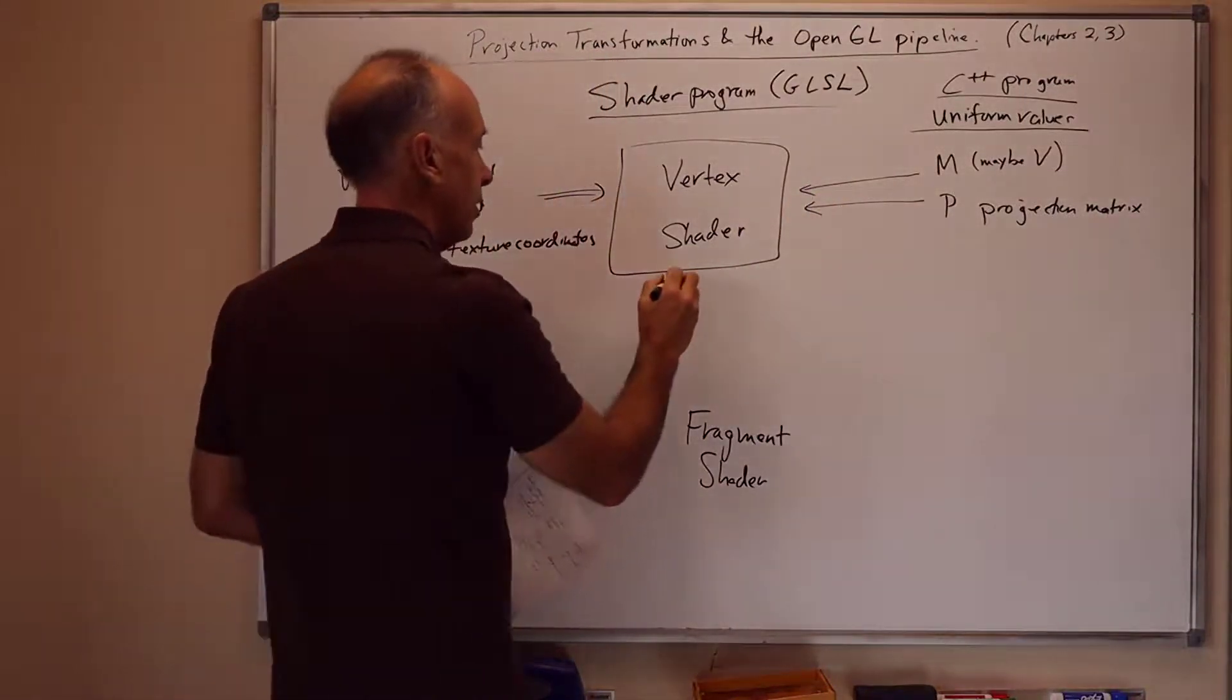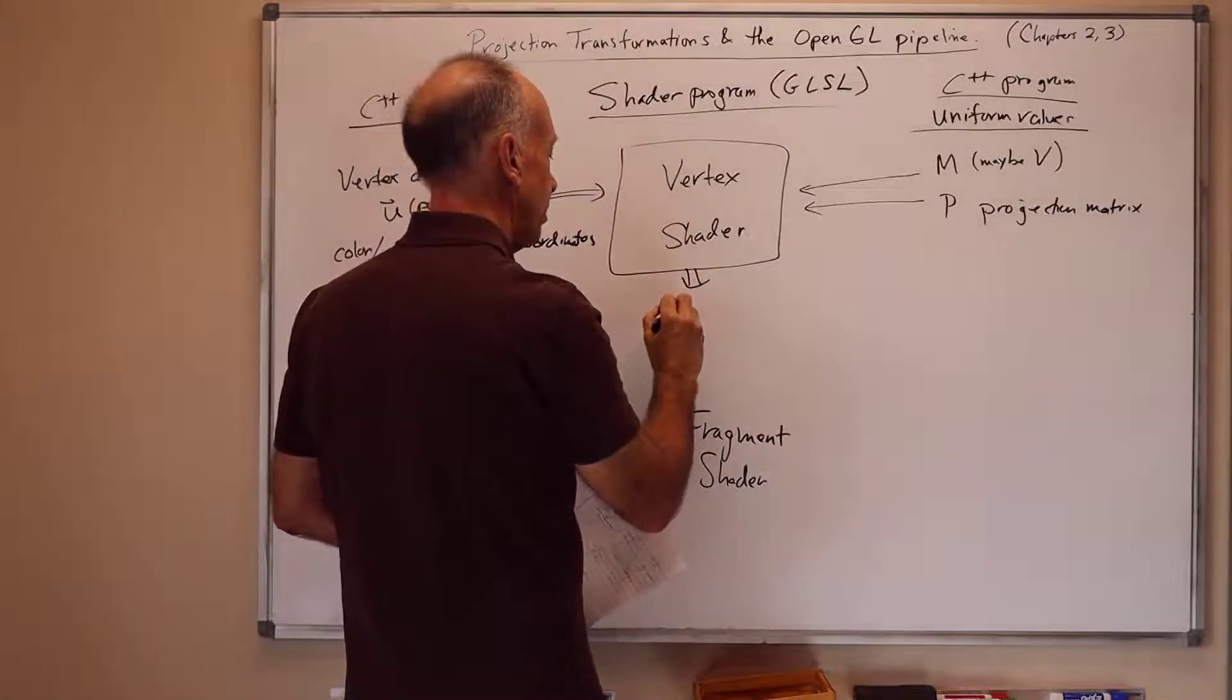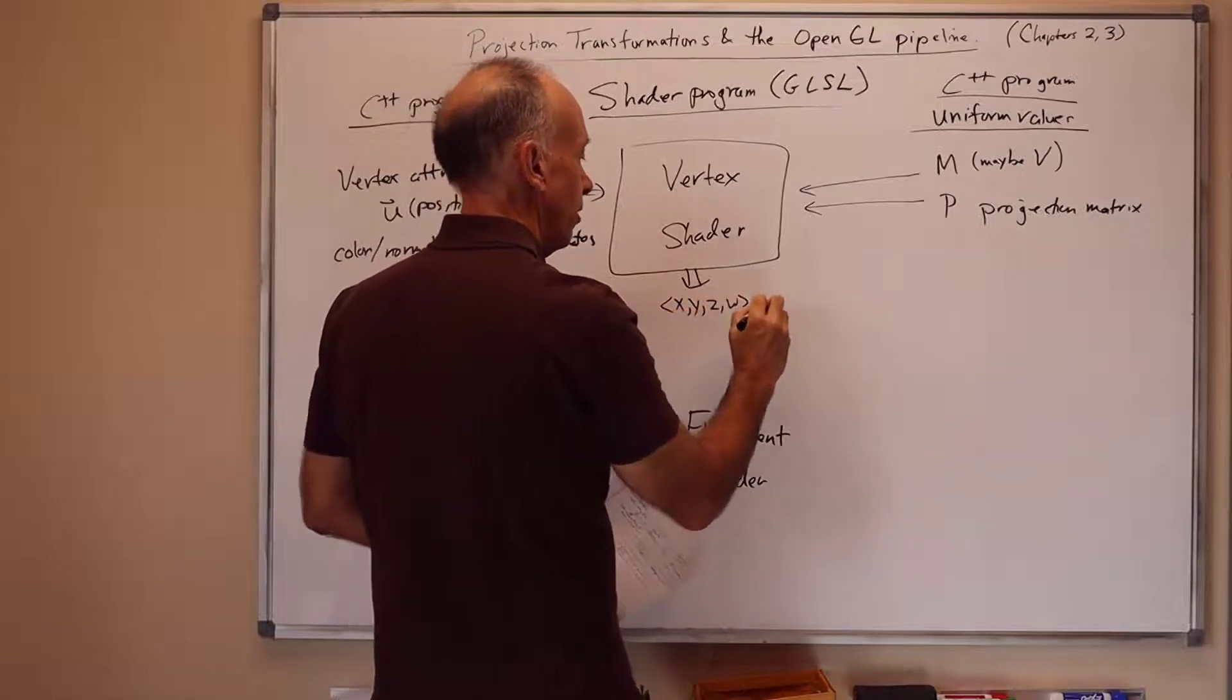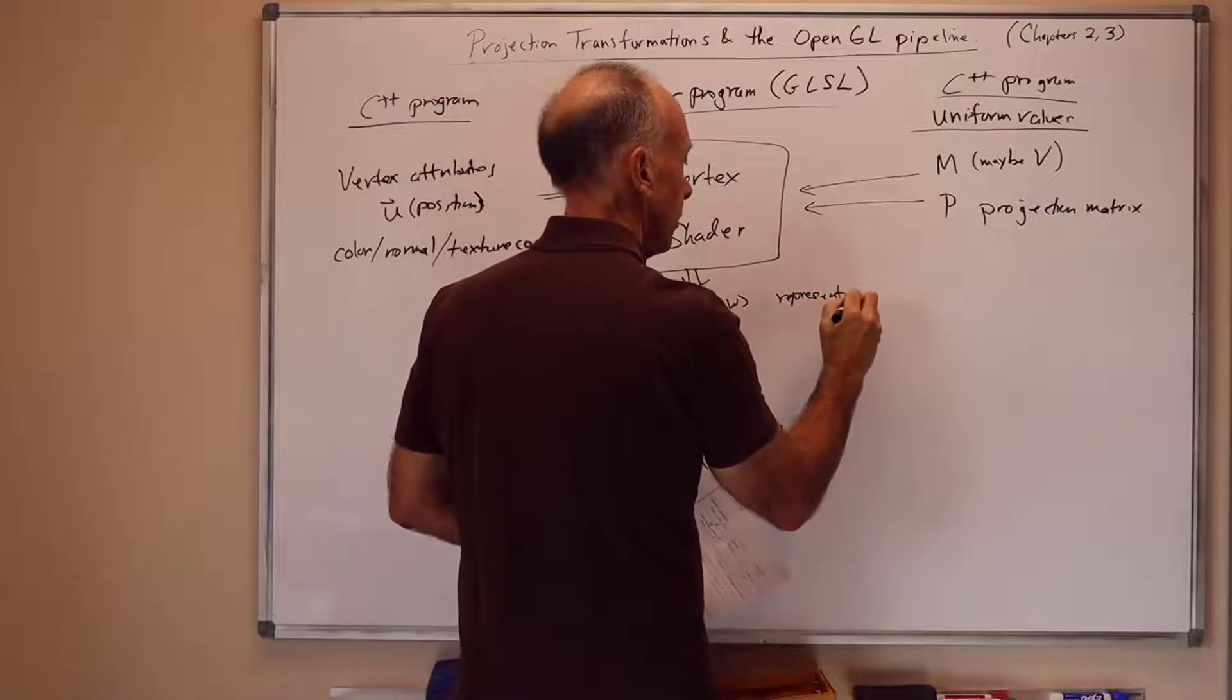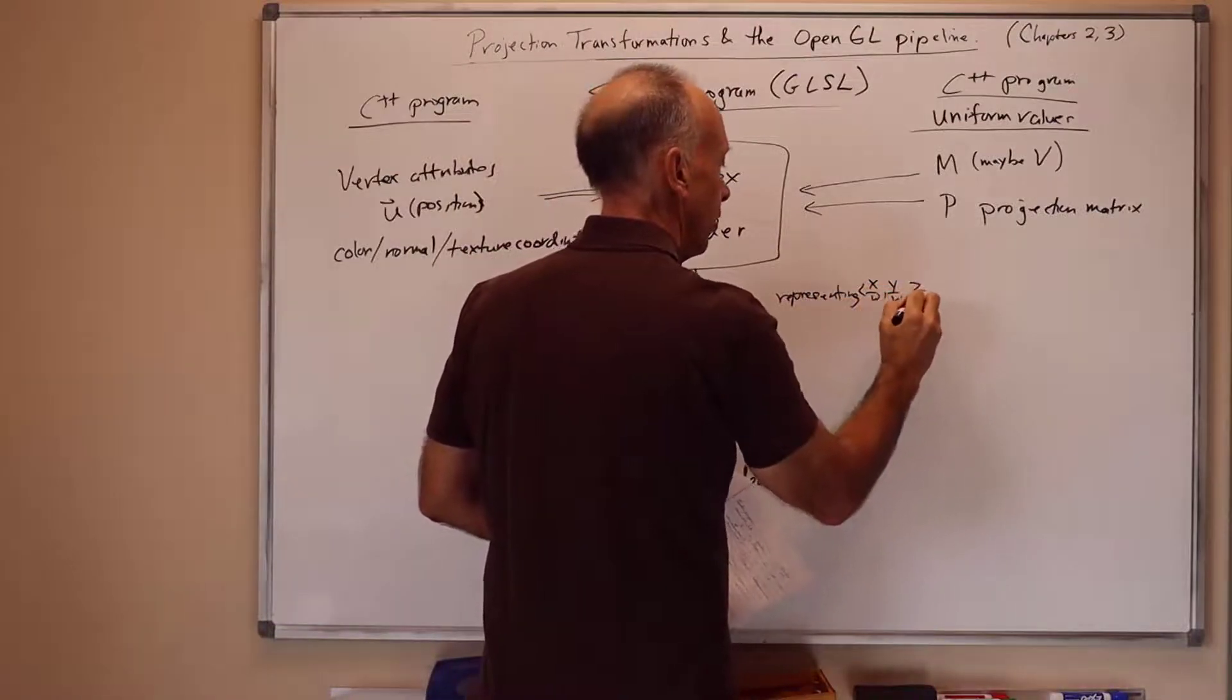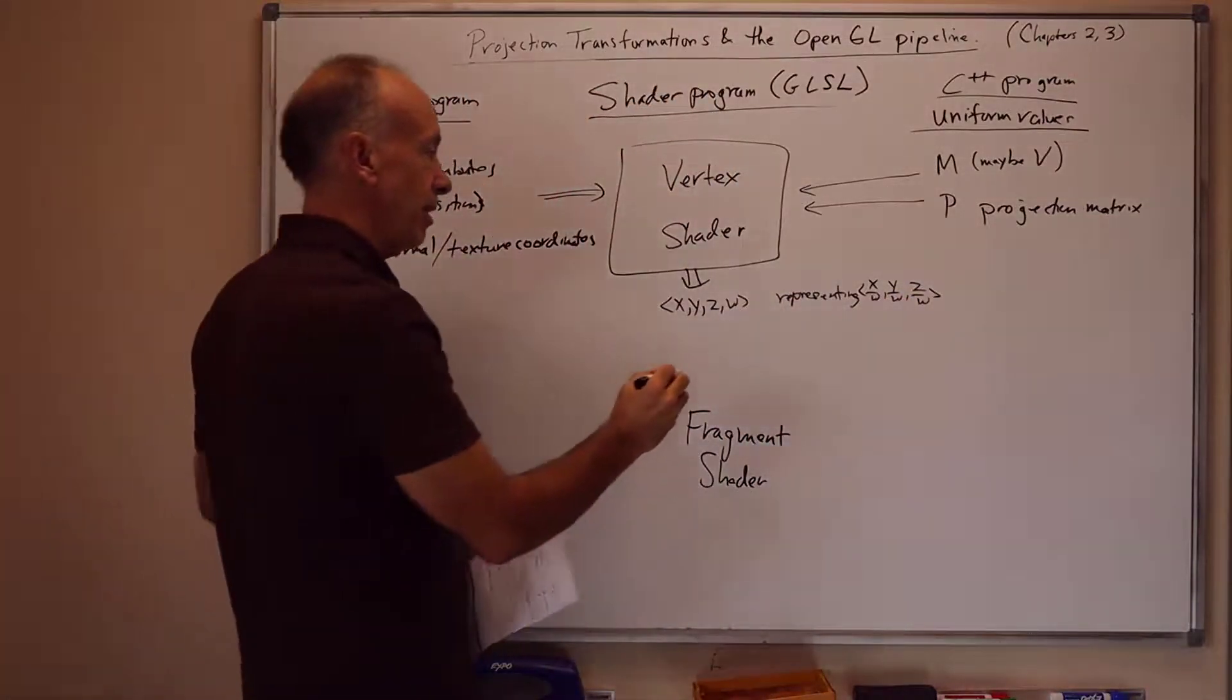And the vertex shader then runs the first stage of the OpenGL pipeline. It outputs that 4-tuple x, y, z, w, which is representing x over w, y over w, z over w, exactly as before. And this determines pixel locations on the screen.